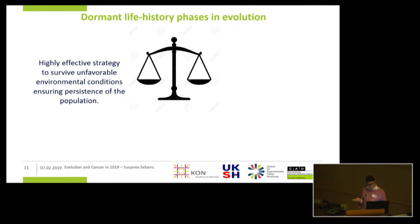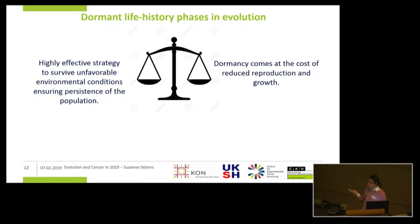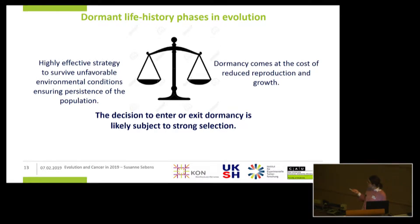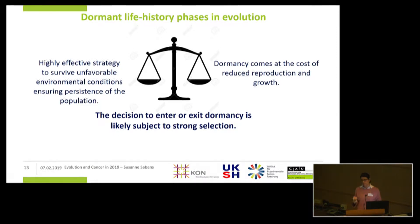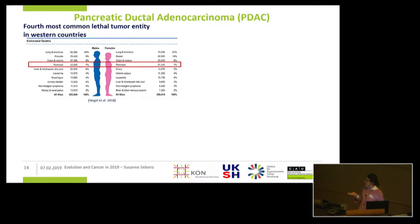Regarding the role of these dormant stages: on the one hand, it seems to be a highly effective strategy to survive under hostile conditions and thereby ensure the persistence of the population — however, this is at the cost of a reduced reproduction and growth. That means the population does not increase during this time and is very small. We have to assume that the decision to enter or to exit this stage is likely subject to strong selection. We need to better understand the traits on the side of the cancer cells that determine entry and exit, and the selection forces given by the ecological niche. This particularly applies to pancreatic ductal adenocarcinoma, shortly PDAC, which is the focus of our research.